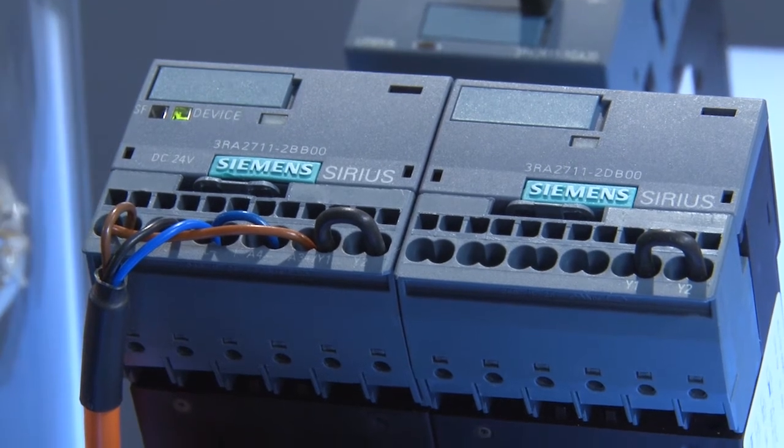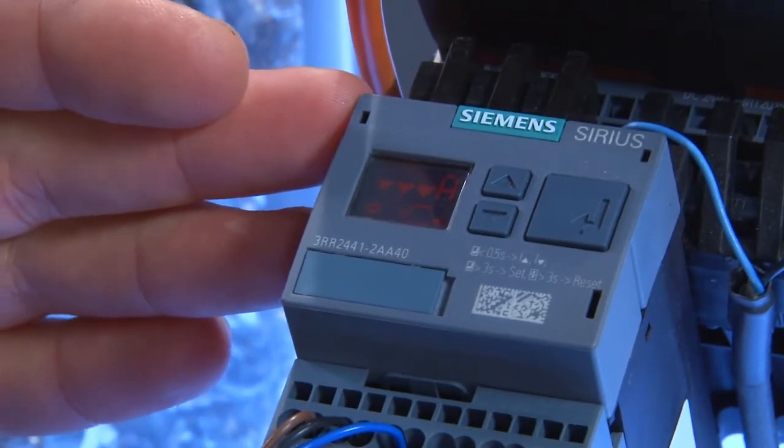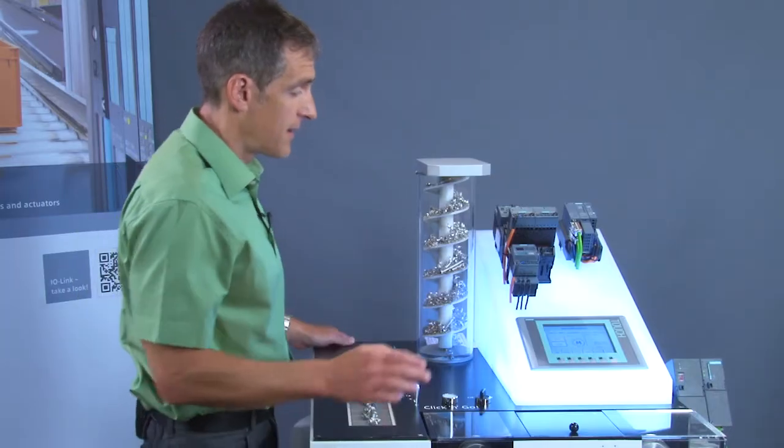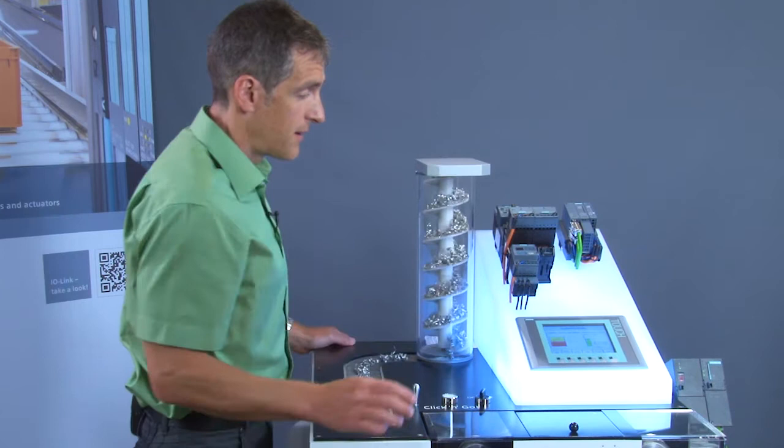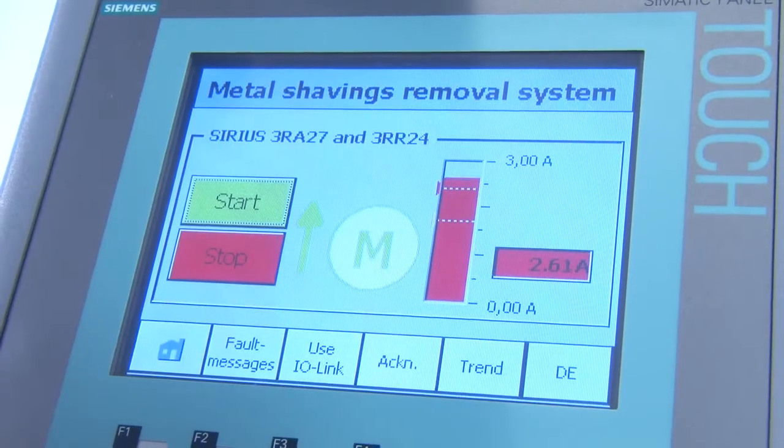When a specified threshold value is reached, a Sirius-3AR24 current monitoring relay is triggered. The reversing starter combination then switches to reverse operation.